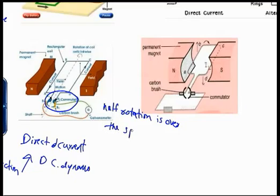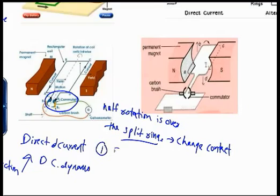During the first half cycle, S1 is in contact with B1 and S2 is in contact with B2. During the second half cycle, S1 is now in contact with B2 and S2 is now in contact with B1.